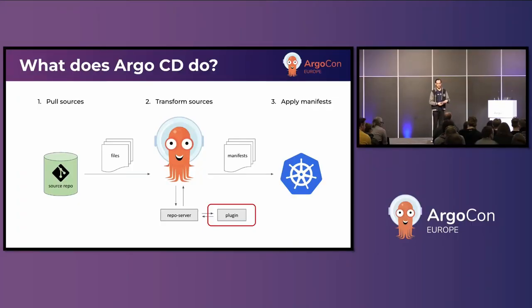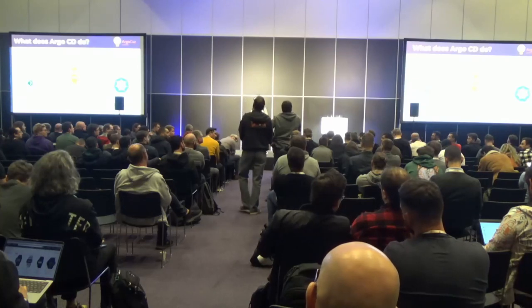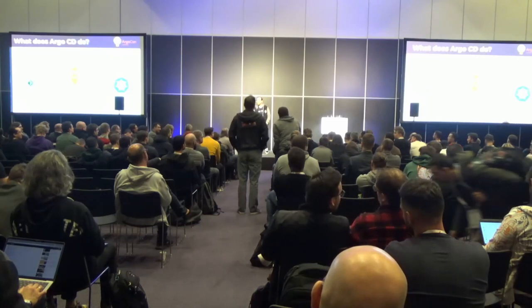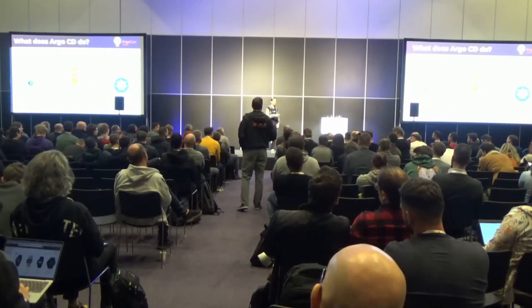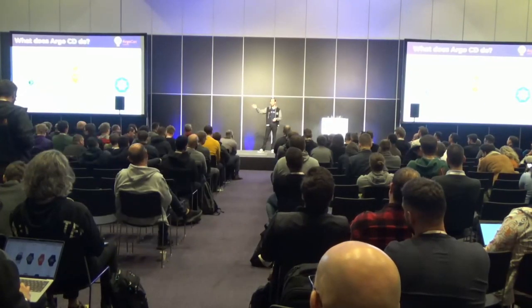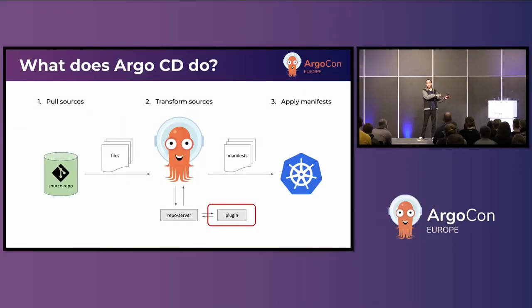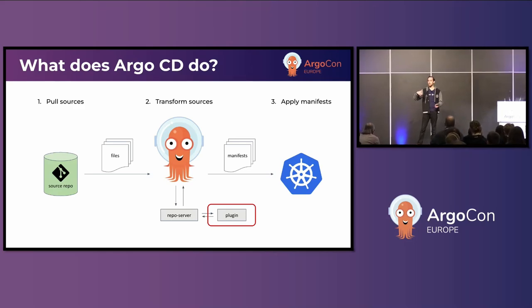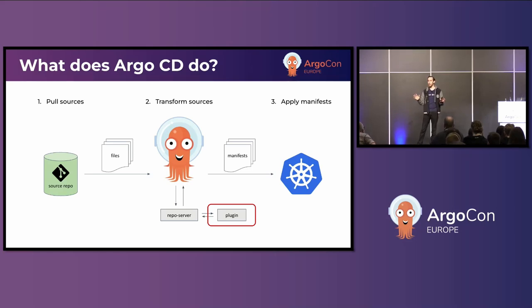Question: how do CMP plugins work with multi-source applications? They don't currently. When we wrote multi-source apps, we really wanted to solve one specific use case — people want to put their Helm values file in a Git repo and use a public Helm repository for the chart itself. Someone has put up a PR to allow different sources to access arbitrary files from other sources, which would enable a plugin calling Helm to use an external values file. It's a big PR and will take a while to review, but we do want to support that use case.